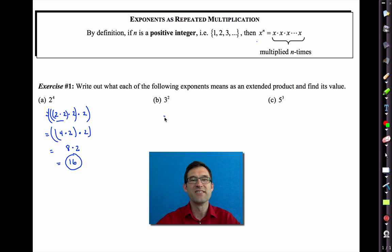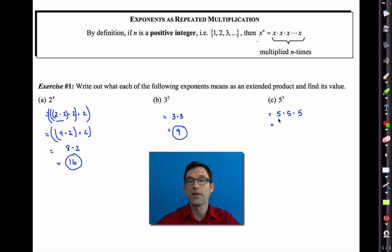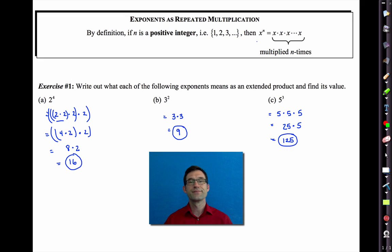A little bit easier: three to the second, or three squared, is three times three — that's simply nine. Likewise, five to the third, or five cubed, is five times five times five. We can think of this as five times five, which is 25, and then 25 times five is 125.